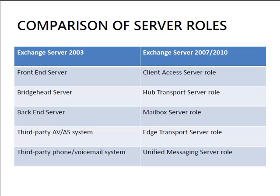Previously in Exchange Server 2003 we had concepts of server roles. Exchange Server 2003 itself was installed the same way no matter which role you were configuring it for, but then through a series of configurations you could place it into various roles within the organisation. The first role was known as the front-end server, which was typically internet-facing and accepted client communications for things like Outlook Web Access and ActiveSync.